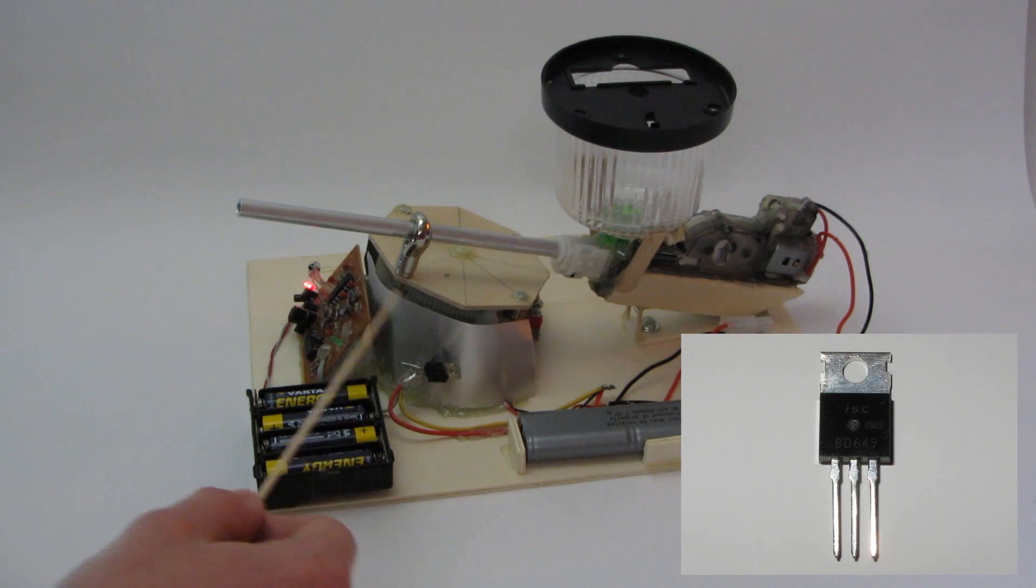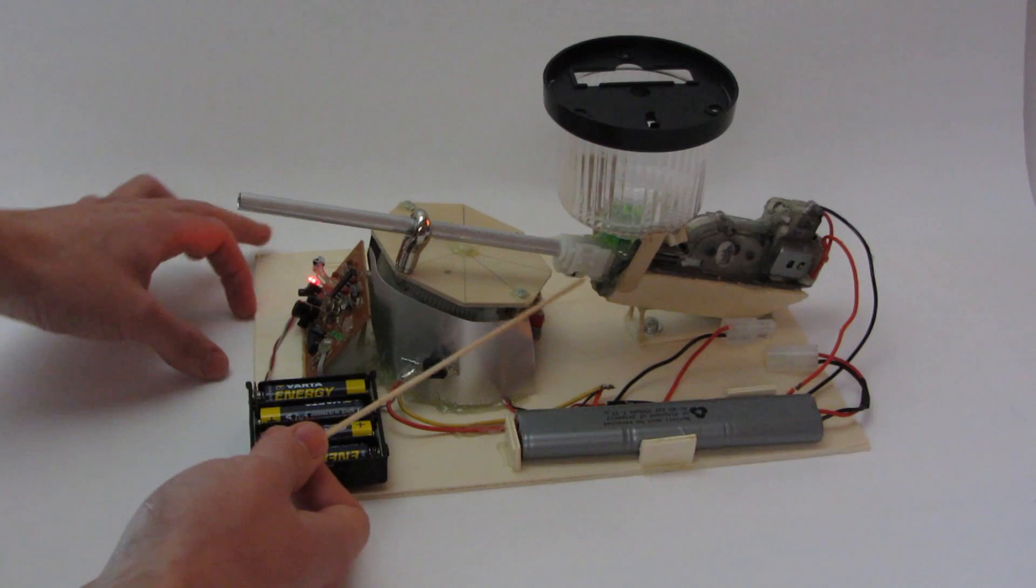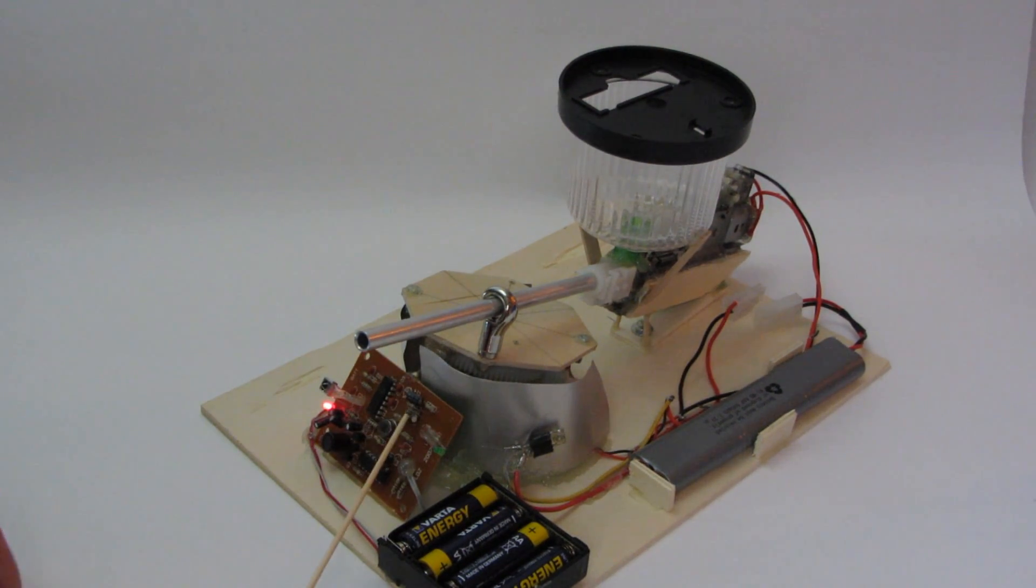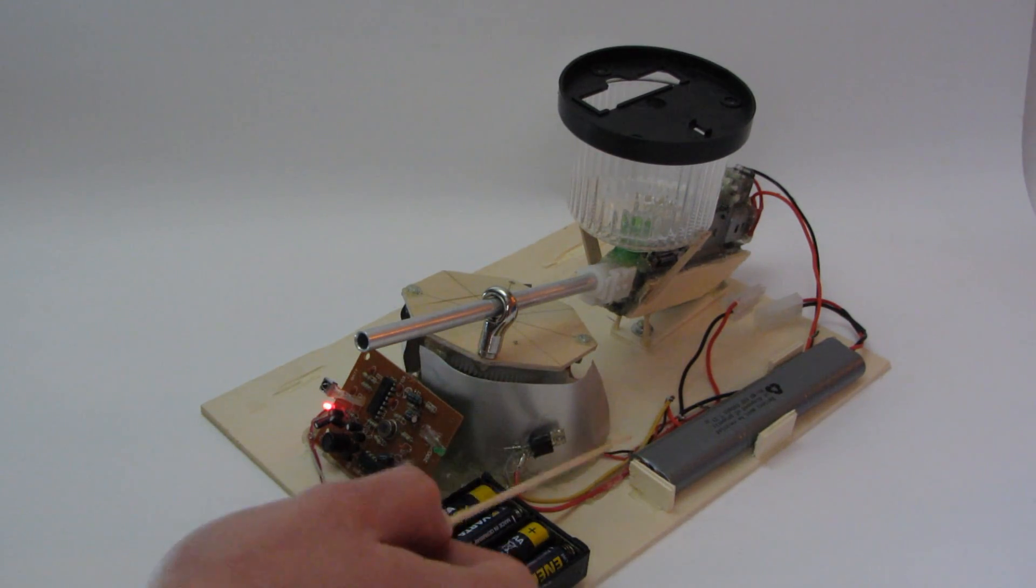How does it work? So, this is the movement alarm. Every time it goes off a red LED will light up. And all I did was connect the red LED to this transistor. It's a BD649 transistor. So every time the alarm goes off it activates the whole system.